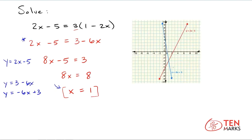And here's our graph. Notice we have the equations y equals negative 6x plus 3, which is right here, and we have the equation y equals 2x minus 5, which is right here. Again, notice you do have a single intersection point, and that means you have one solution for the system of equations. The other interesting thing is that if you look at where x equals 1, that is where the intersection happens at x equals 1.